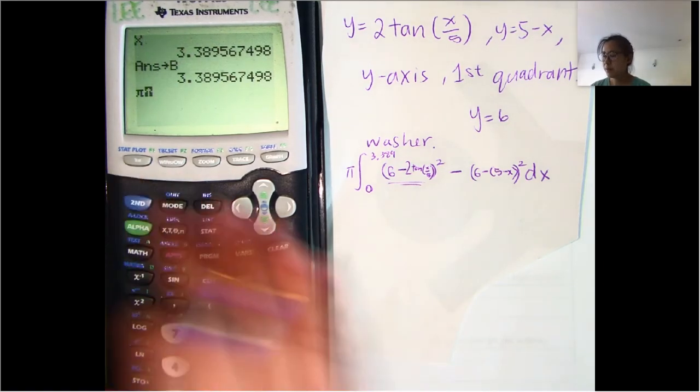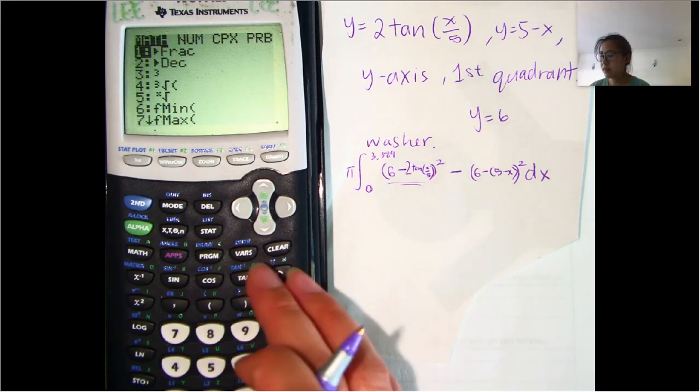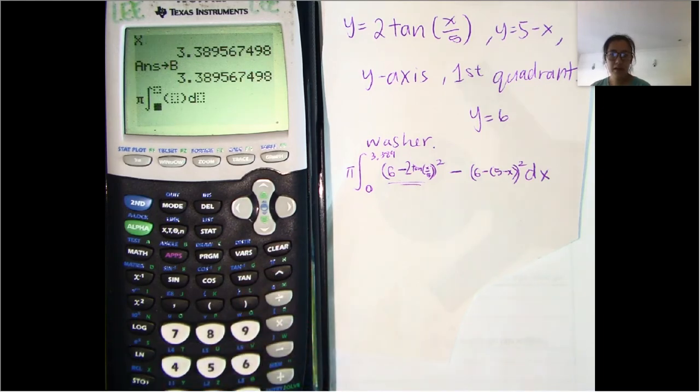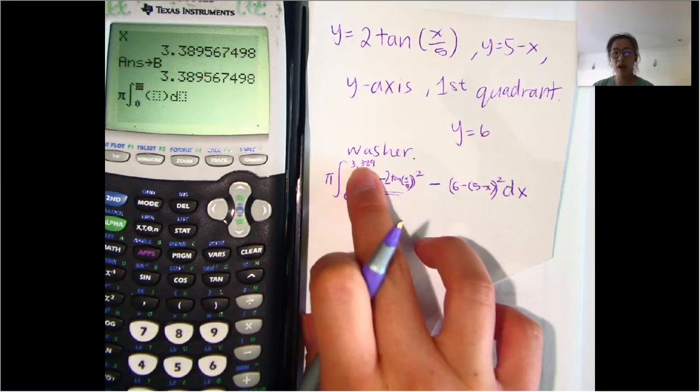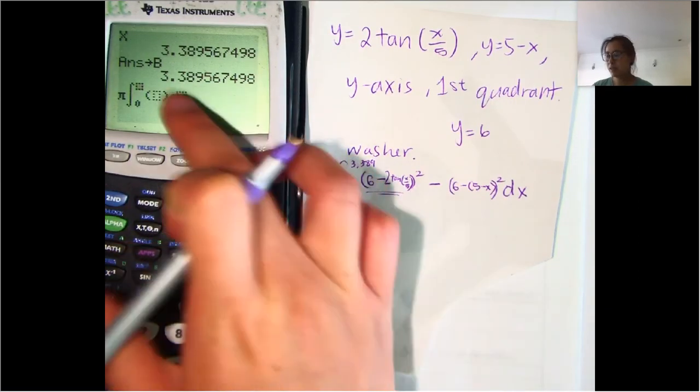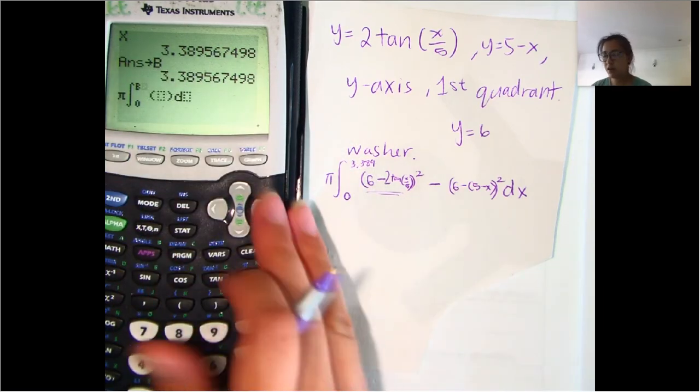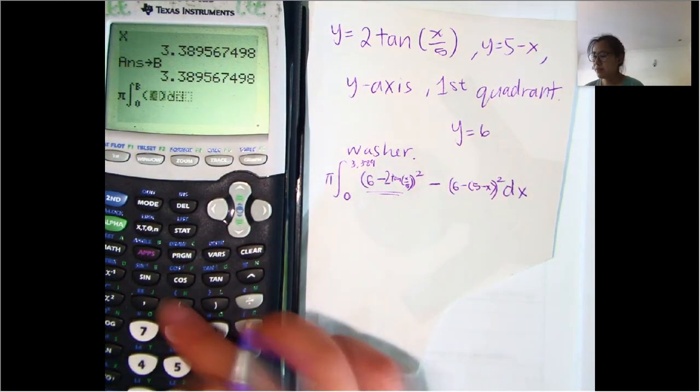So pi and then times math 9, which is fn int, which is the integral. And then from 0 up to, and then you don't want to type in this rounded answer. You want to type in where we started before. So b, we're going to do 0 to b of, and then in parentheses,